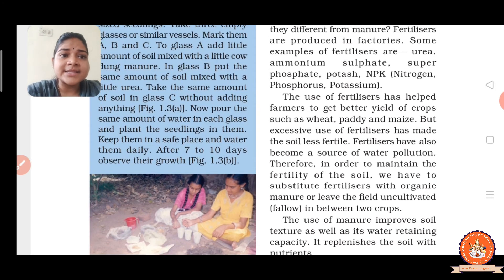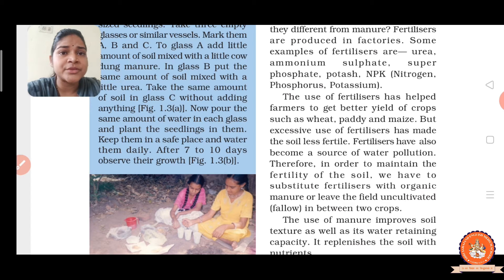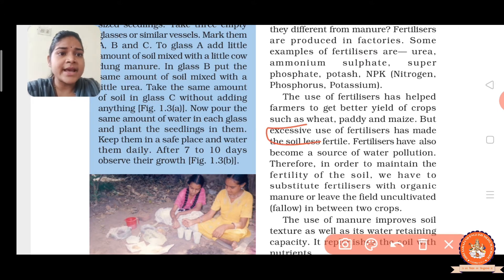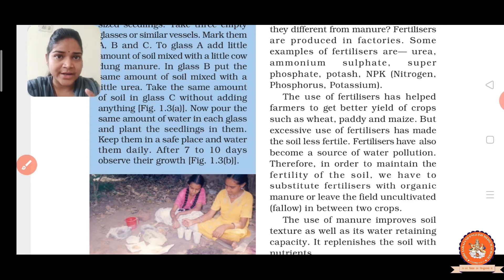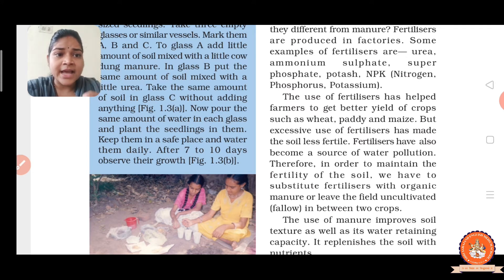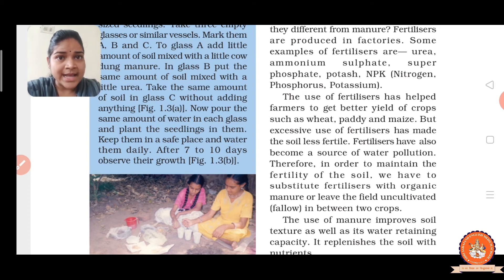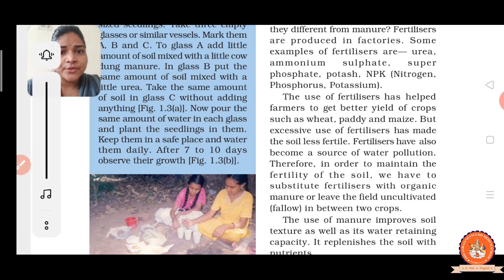Fertilizer and manure are required and essential for the better growth of plants and better output of the crop. But the excessive use of fertilizer makes the soil less fertile. Excessive use also causes water pollution. Therefore, use only the required amount of fertilizer. The fertilizer has also become a source of water pollution.